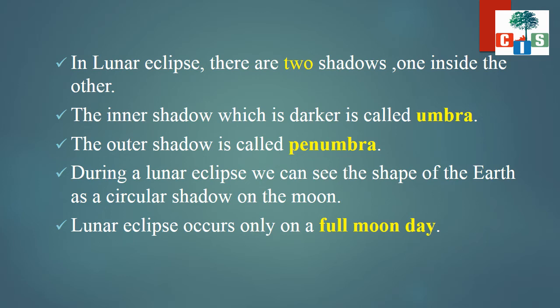During a lunar eclipse, we can see the shape of the Earth as a circular shadow on the Moon. Lunar eclipse occurs only on a full moon day.